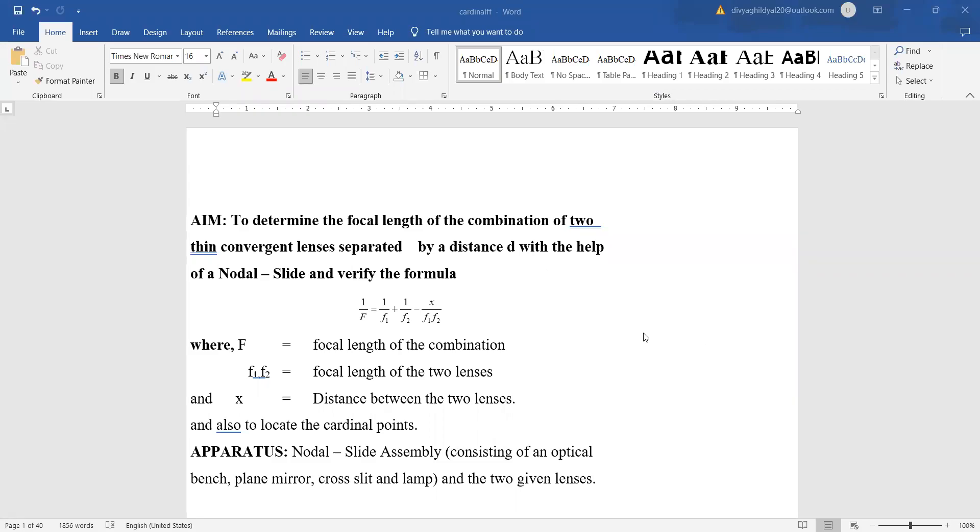Hello students, in today's video lecture, we will be discussing your darkroom experiment where we have to find the focal length of two thin convergent lenses separated by a small distance with the help of nodal slide setup and to verify the formula 1/f = 1/f1 + 1/f2 - x/(f1*f2), where f is focal length of the combination, f1 and f2 are focal lengths of the first and second lenses, and x is the distance between them. We will also locate the cardinal points in this experiment.